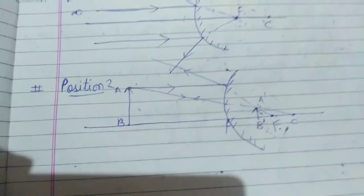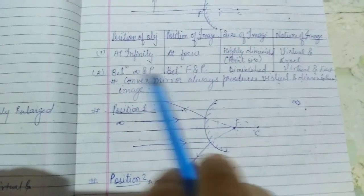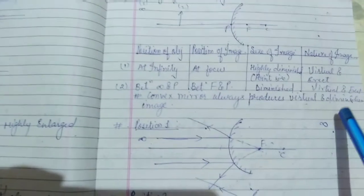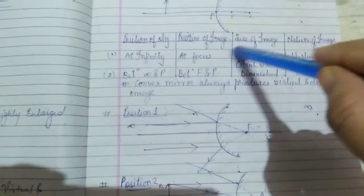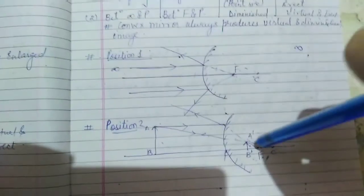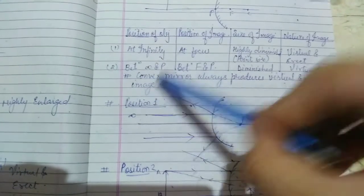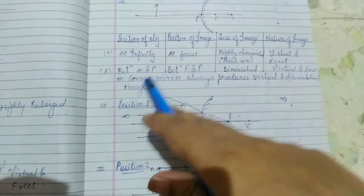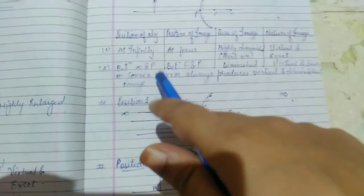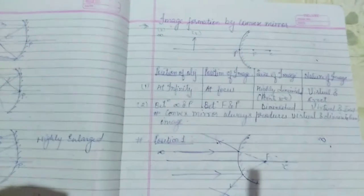The rays are not actually meeting, which is why we do not get a real image. The image is again virtual and erect. This is the result for both cases of the convex mirror. Remember: convex mirror always produces a virtual and diminished image. In both cases the image is smaller than the object, which is why convex mirrors are used in applications where a smaller image is required.